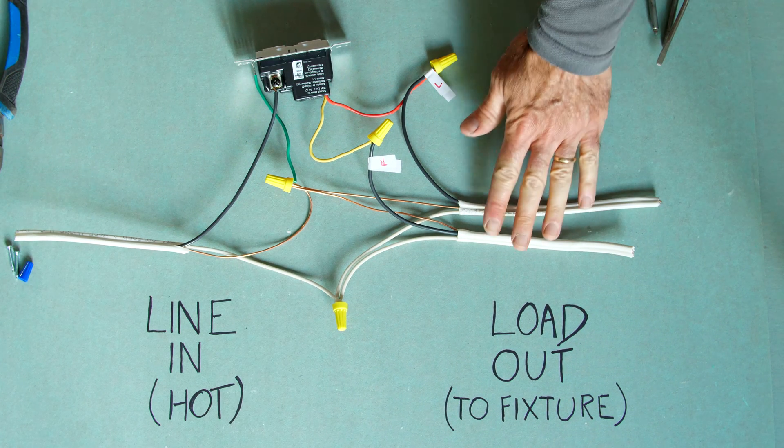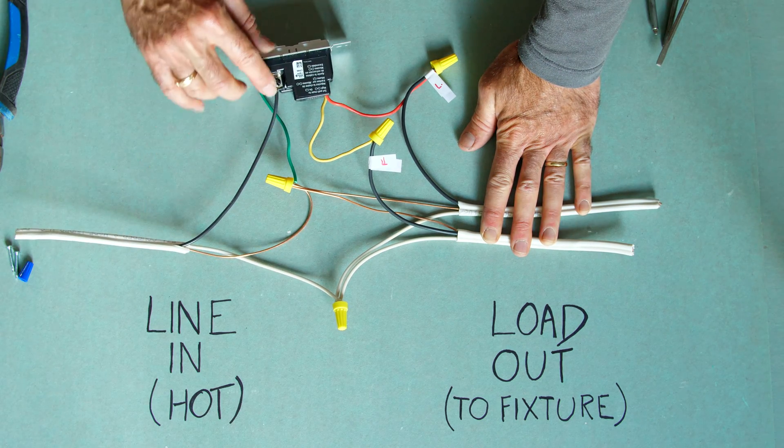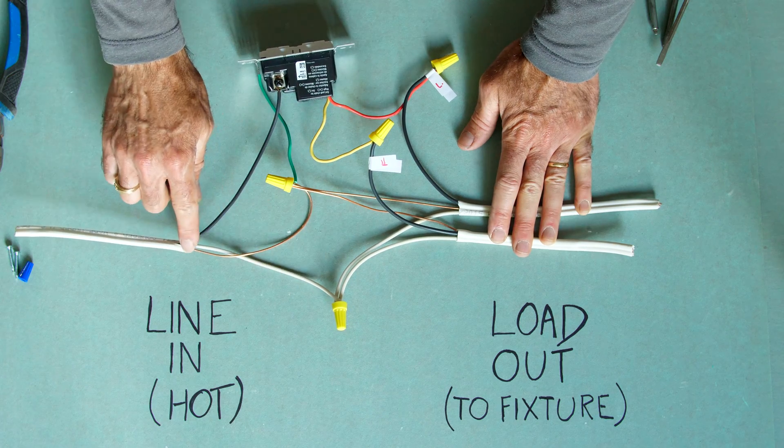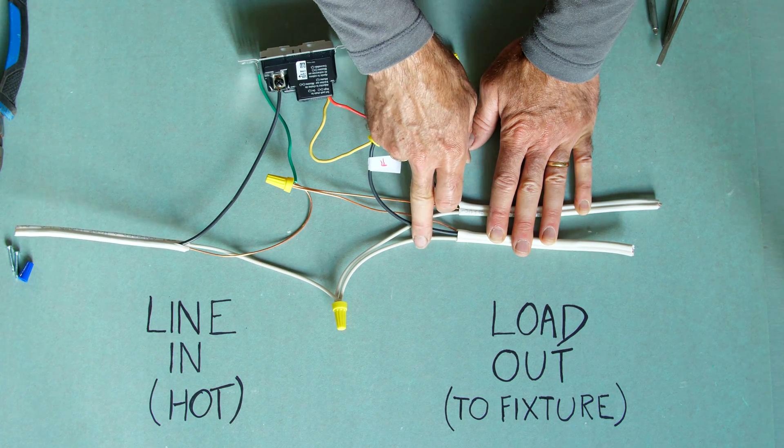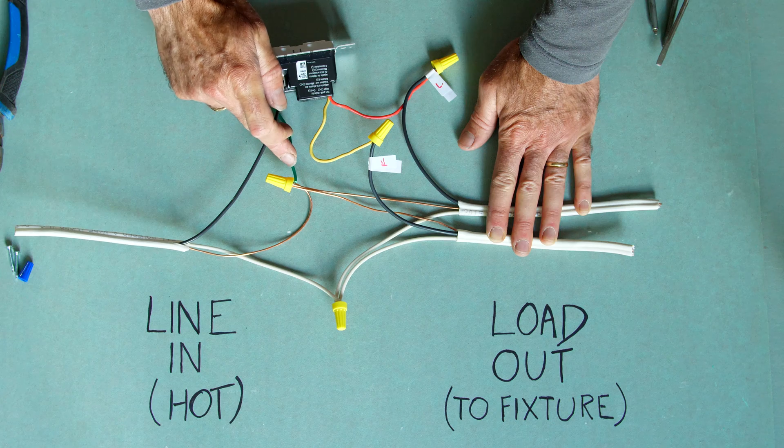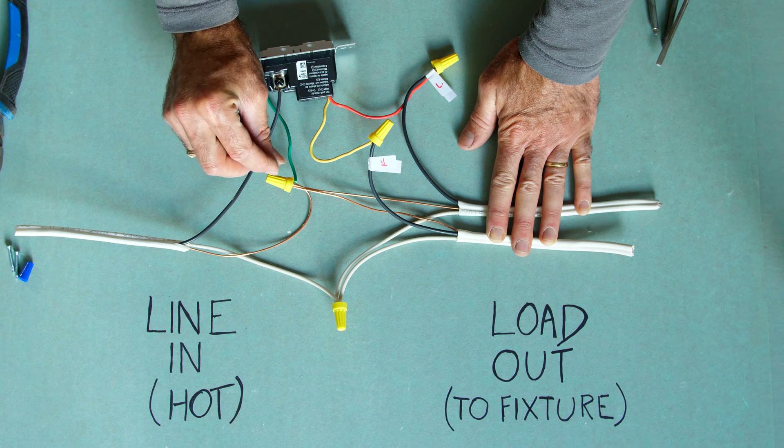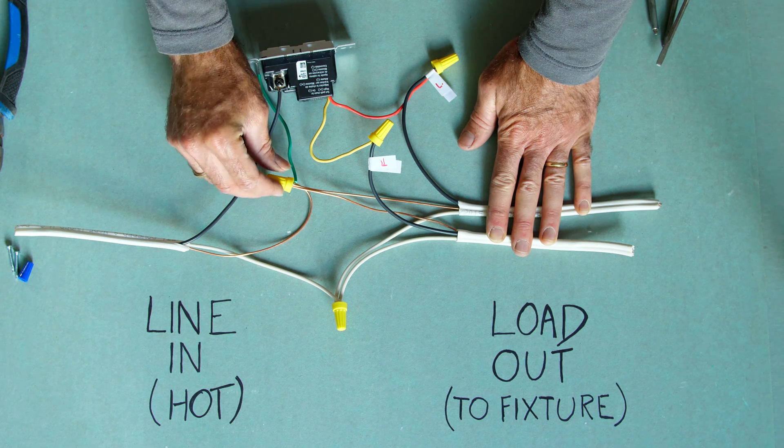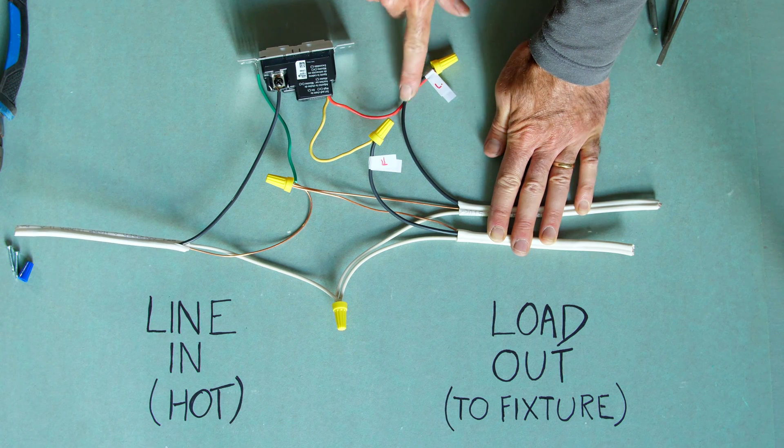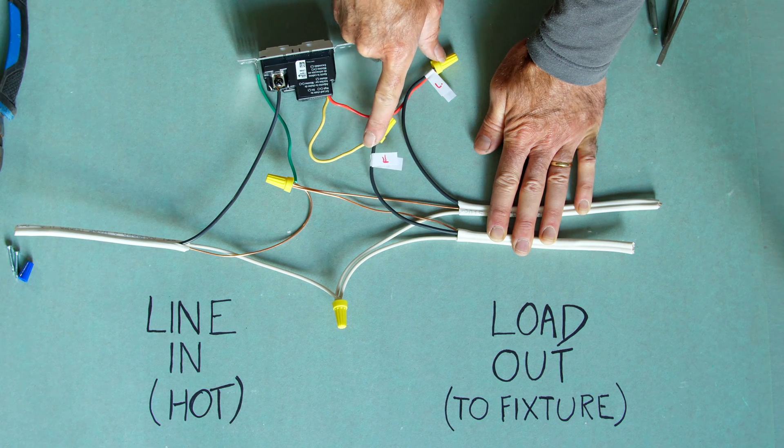So in that scenario where we have two separate two wires coming from the fan and light again we've got our black our hot line in going to our screw post or our black wire depending on our switch itself. We've got all of our whites together so we've got the white of our line in and each white of our load out connected together. We've got all of our grounds together, the green wire from the switch, all of our bare coppers from the three sets of wires, and we'll have another one a pigtail from the electrical box all connected together. We've got our light switch designated light wire to our light and we've got our switch designated fan motor wire to our motor.